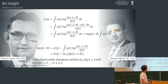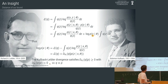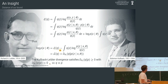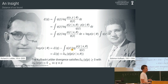Now on the right hand side we have the thing we're trying to compute — the evidence. We rearrange: we see that the evidence is actually equal to our lower bound L minus the integral over q(z) times log of p(z|x, theta) divided by q(z). This expression — the minus integral — is called the KL divergence.